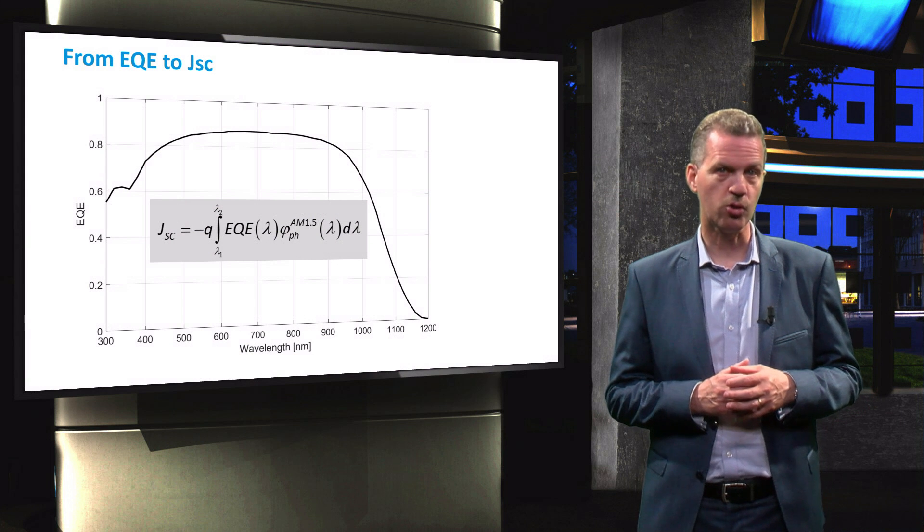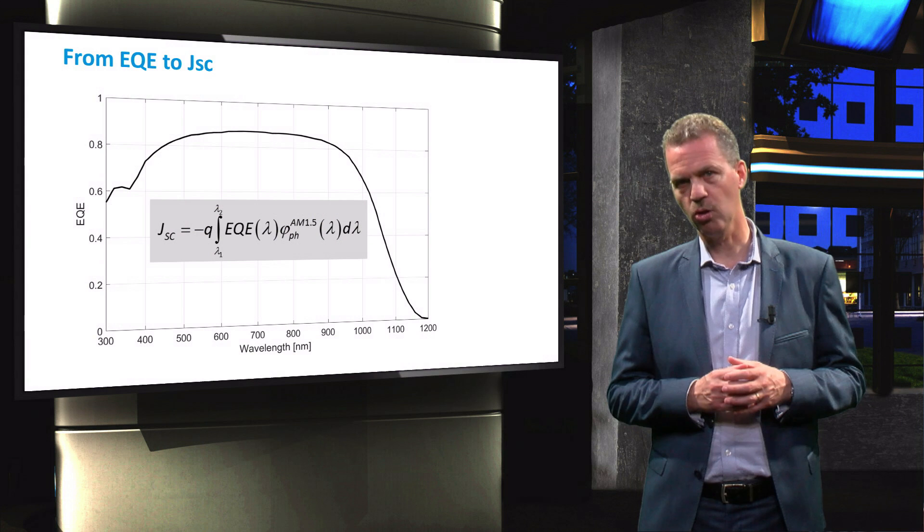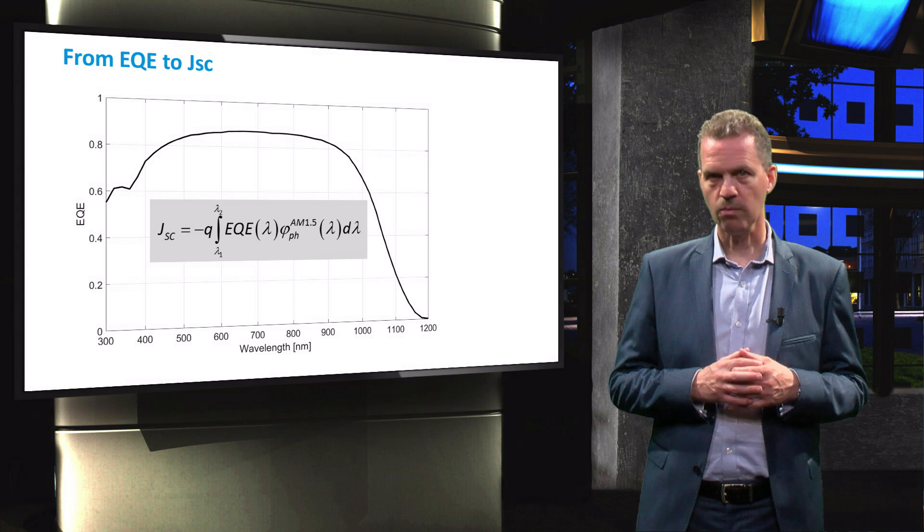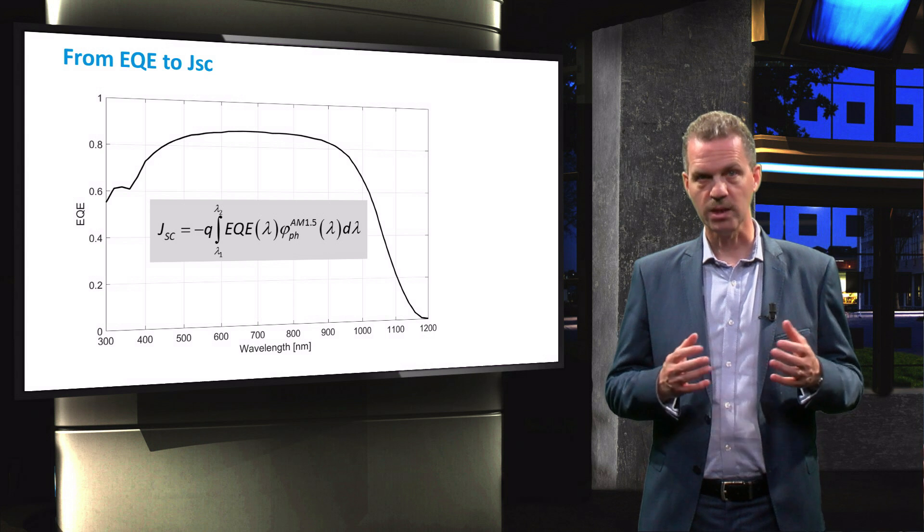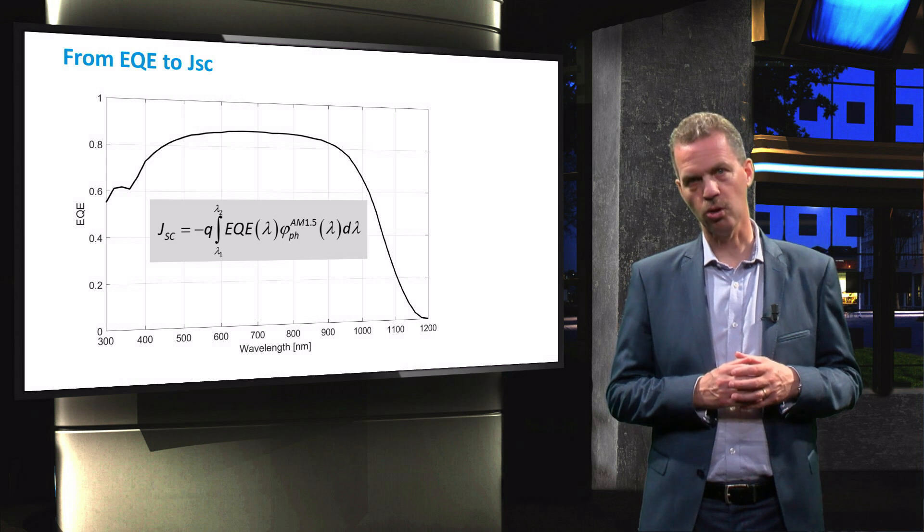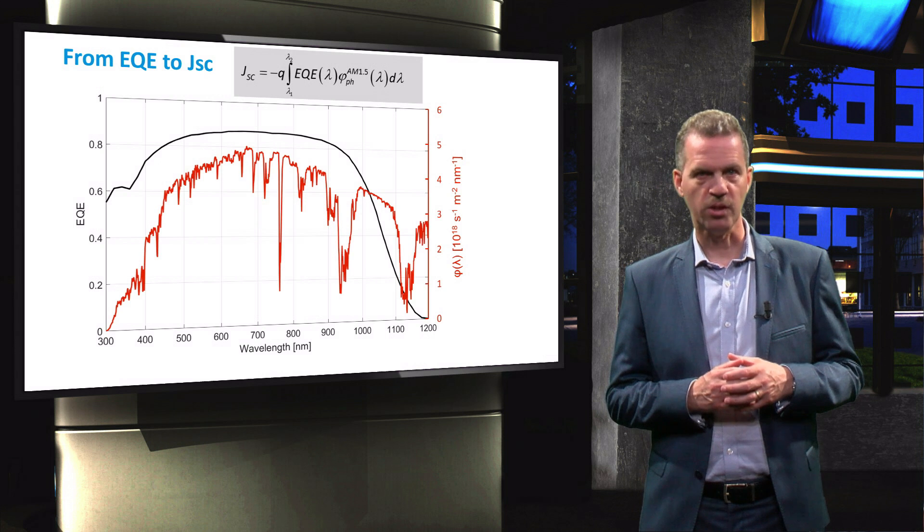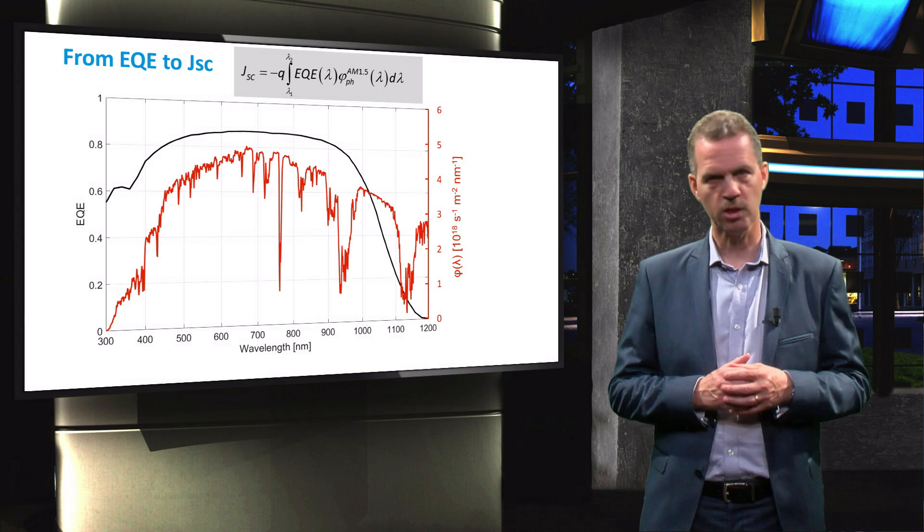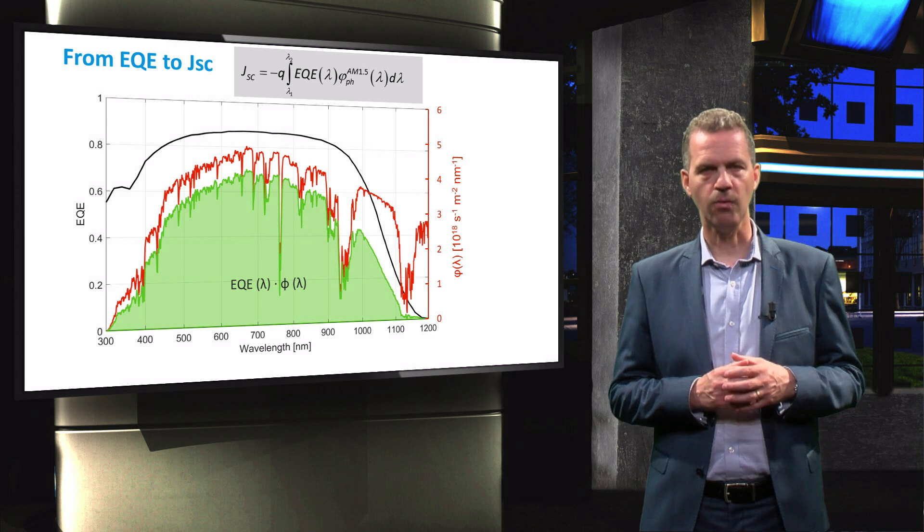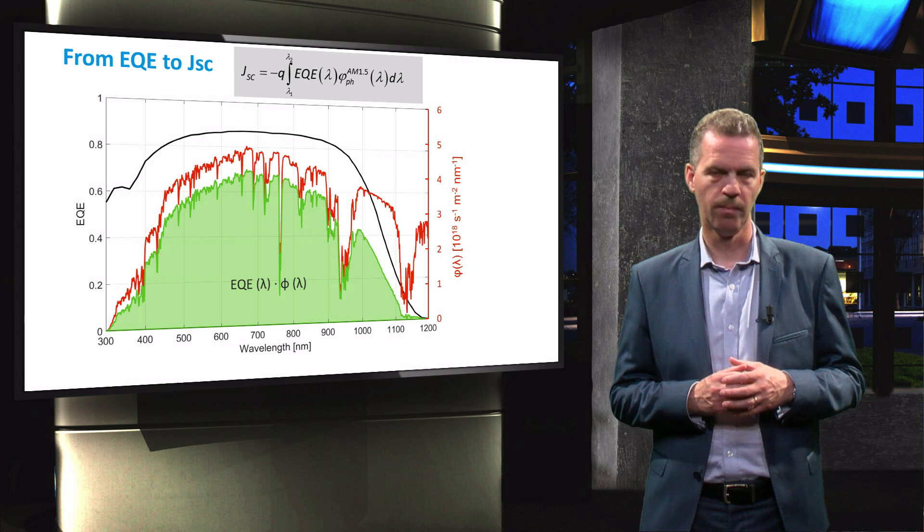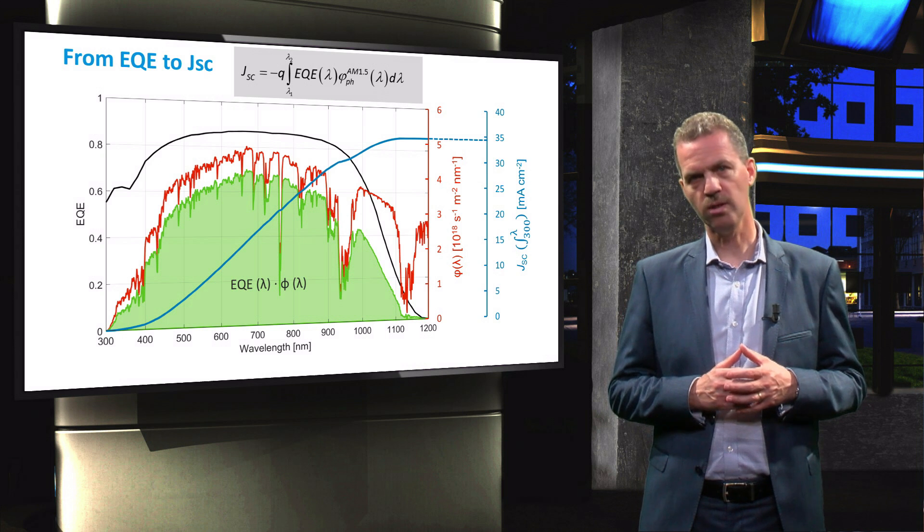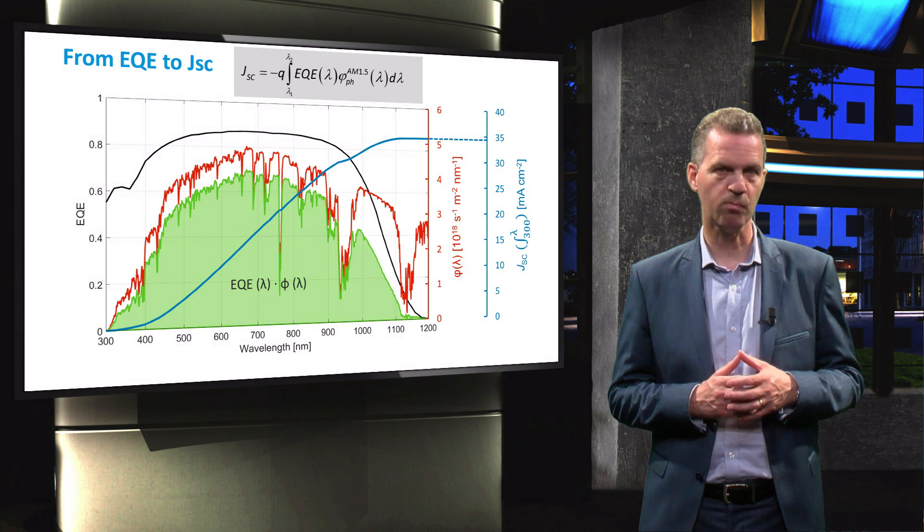This equation shows how the short-circuit current density JSC is related to the external quantum efficiency and the AM1.5 spectral photon flux. The photon flux at a certain wavelength is multiplied by the EQE of the cell, which is measured in short-circuit conditions, and is then integrated over the wavelengths to obtain the total short-circuit current density. The spectral photon flux of the Sun's AM1.5 spectrum can be measured with a spectrometer. Multiplied with the EQE curve, it gives the green area representing the charge carrier flux collected at the terminals of the solar cell. When this area is integrated over the wavelength, we obtain the following curve. The total short-circuit current density of this particular cell is about 34 milliamps per square centimeter.